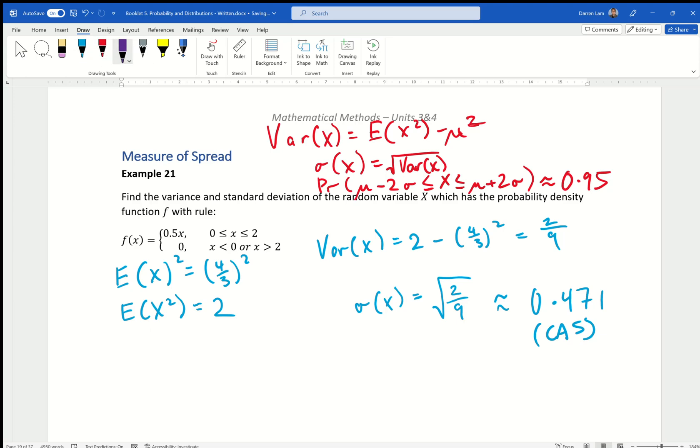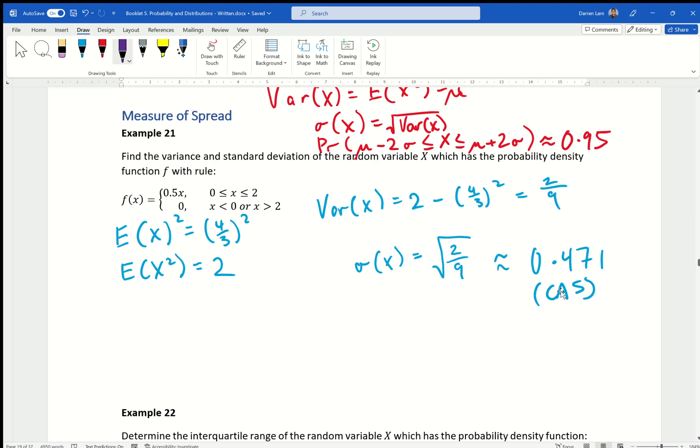A quick note. Something you might be considering right now is, well, if we're doing the square root of 2 over 9, isn't it plus or minus 0.471? Something to note that I'd like you to write down as well. The variance cannot be less than 0. It can be 0. It can be positive. But it cannot be less than 0. In the same vein, the standard deviation also must be positive or 0.